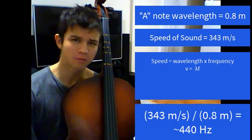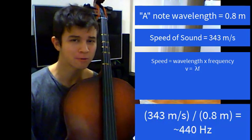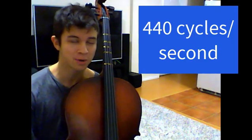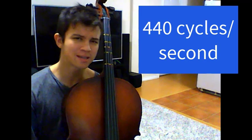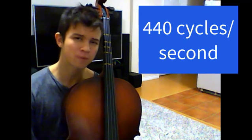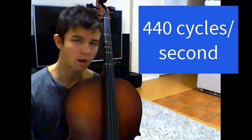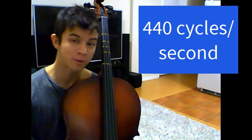If we do this for the A note, we find that approximately 440 wavelengths, or cycles, pass every second into our ears. We would then say in physics that the wave has a frequency of 440 cycles per second, or more commonly called 440 hertz.